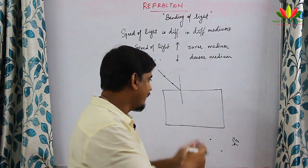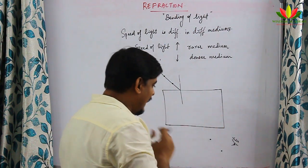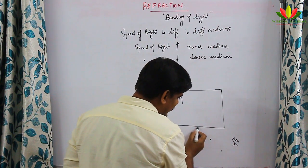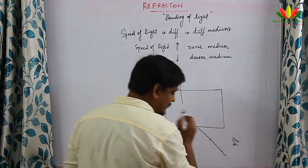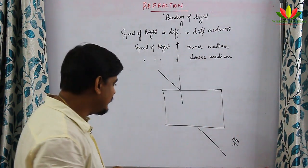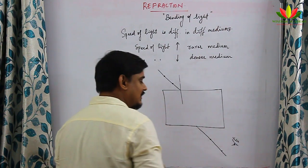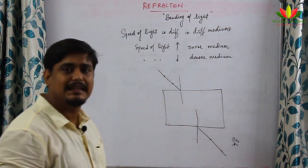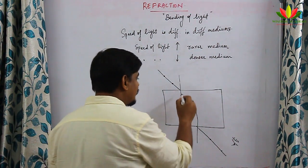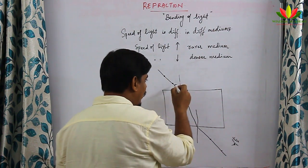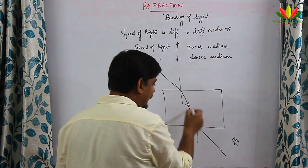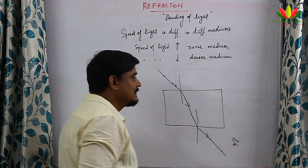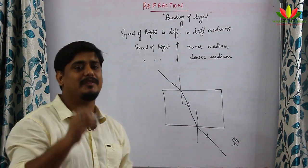We remove the two pins and the glass slab, then join these two pins in a straight line intersecting the glass slab boundary. At the intersection point we drop a perpendicular, then join the lines. We find that the line bent at the first surface and bent again at the second — this is due to refraction.